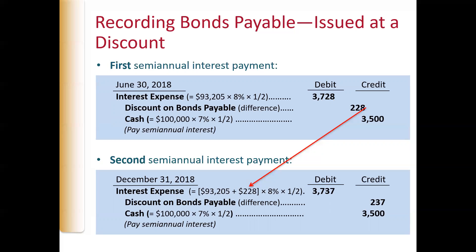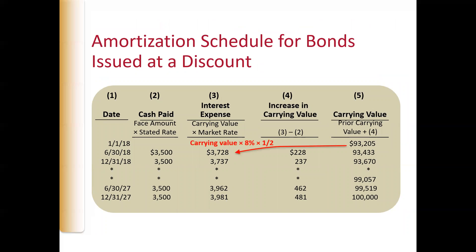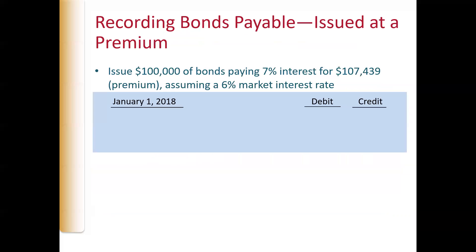After the second payment, that discount on bonds payable gets added to the outstanding amount on the bond. The carrying value on the bonds increases after each payment, and the interest will also increase. The amortization schedule shows the carrying value increases after each payment and ultimately will come to $100,000.